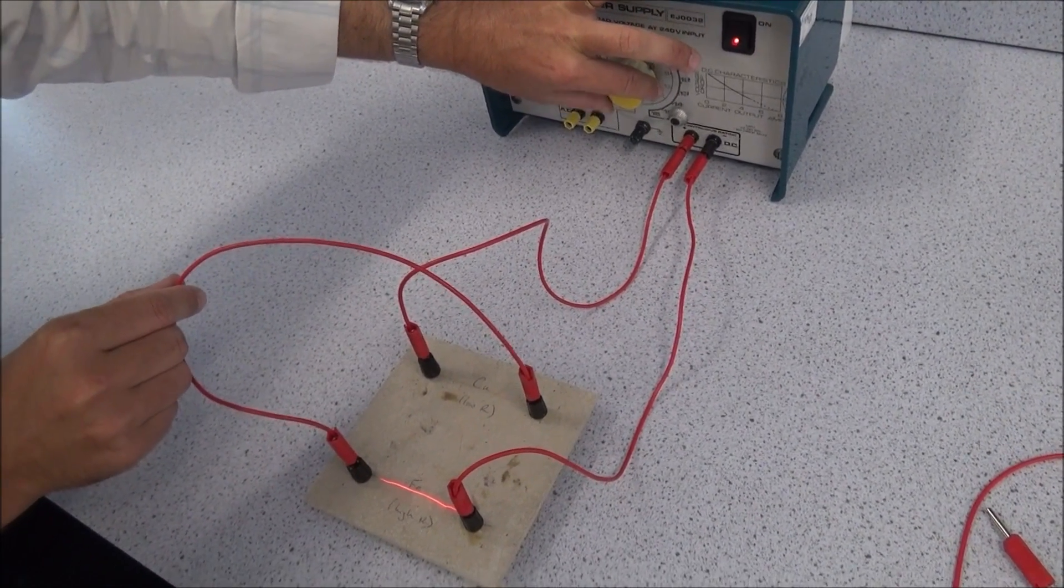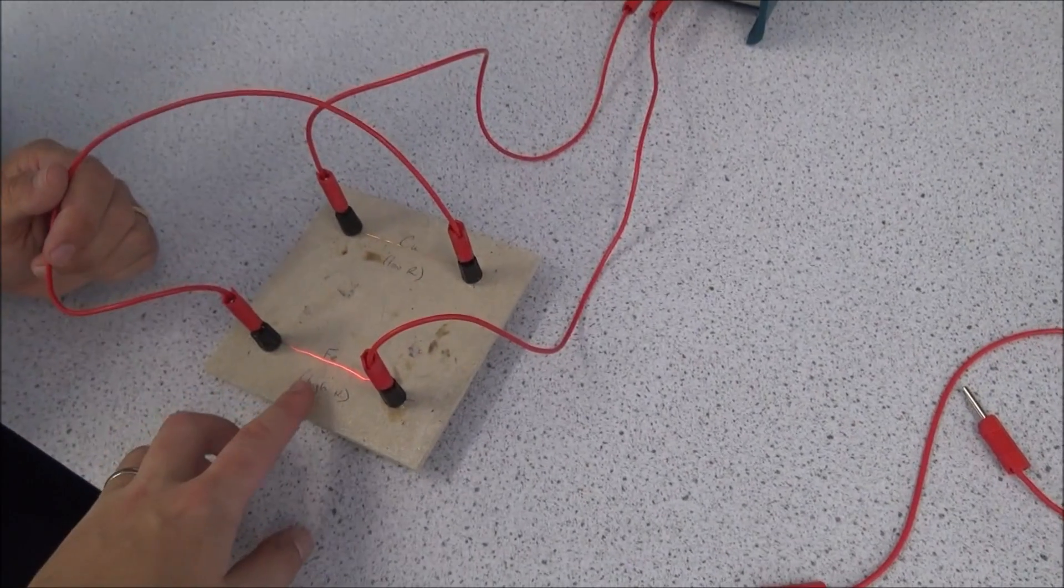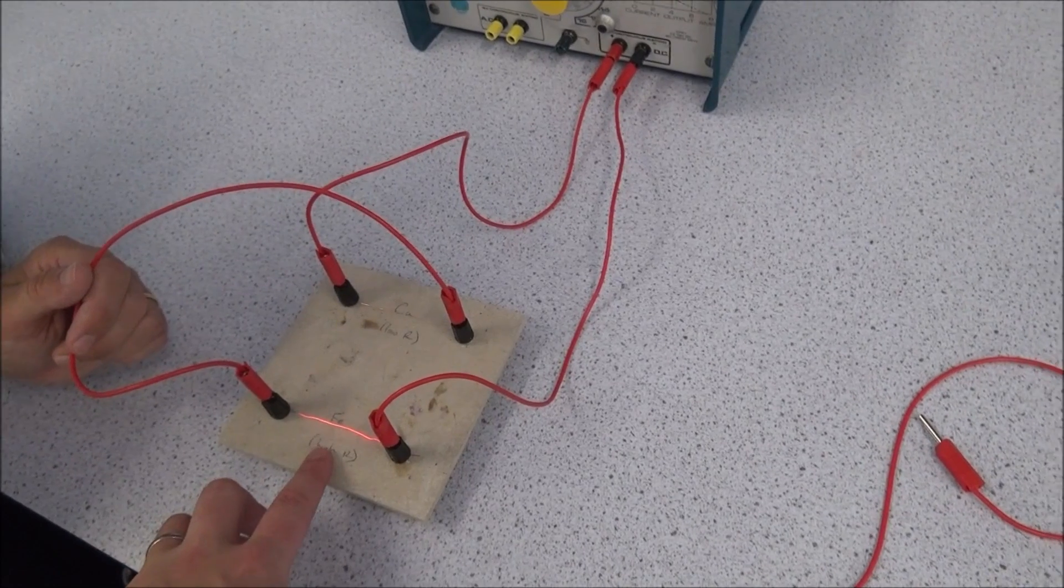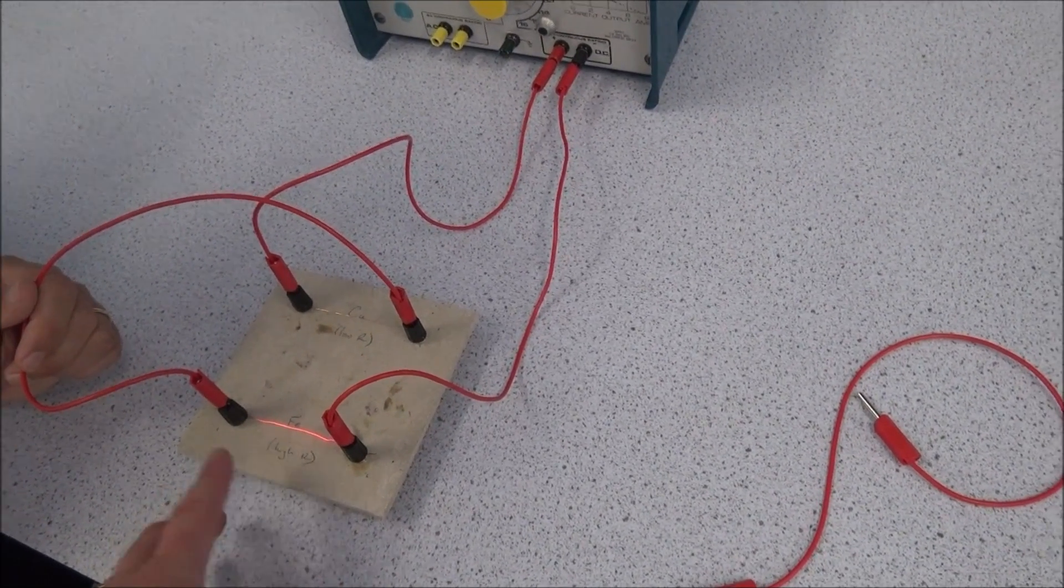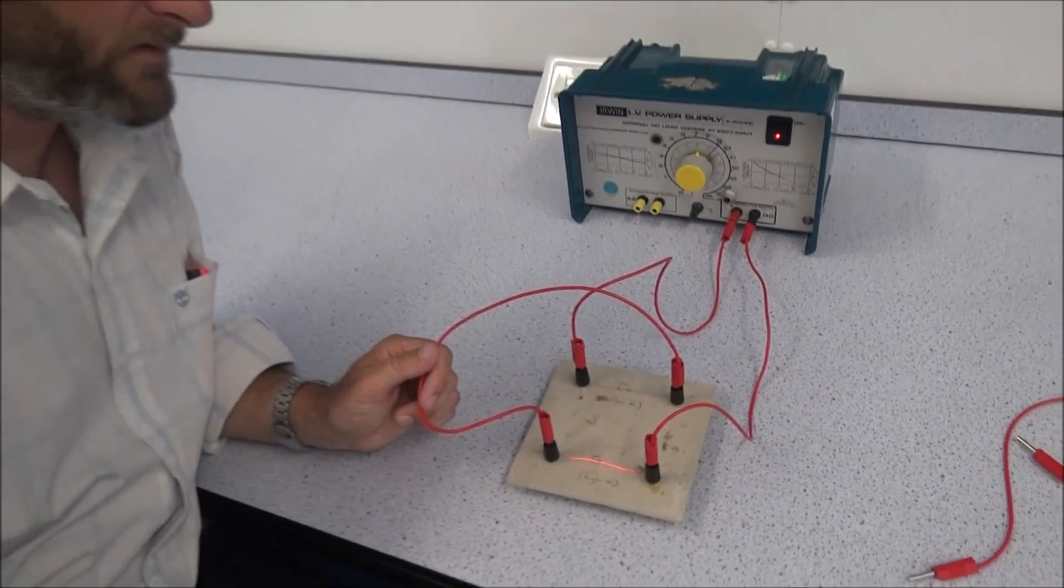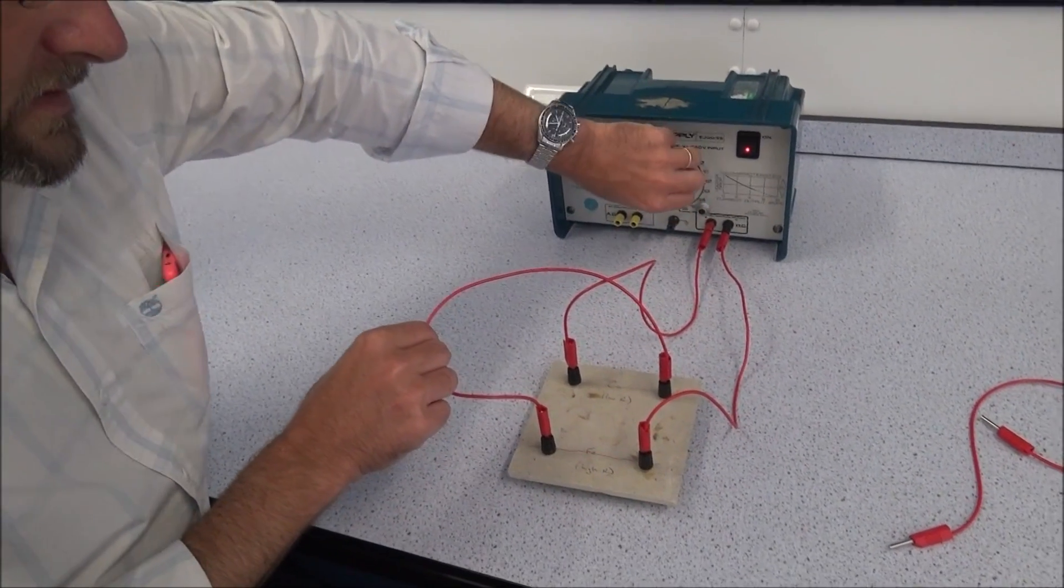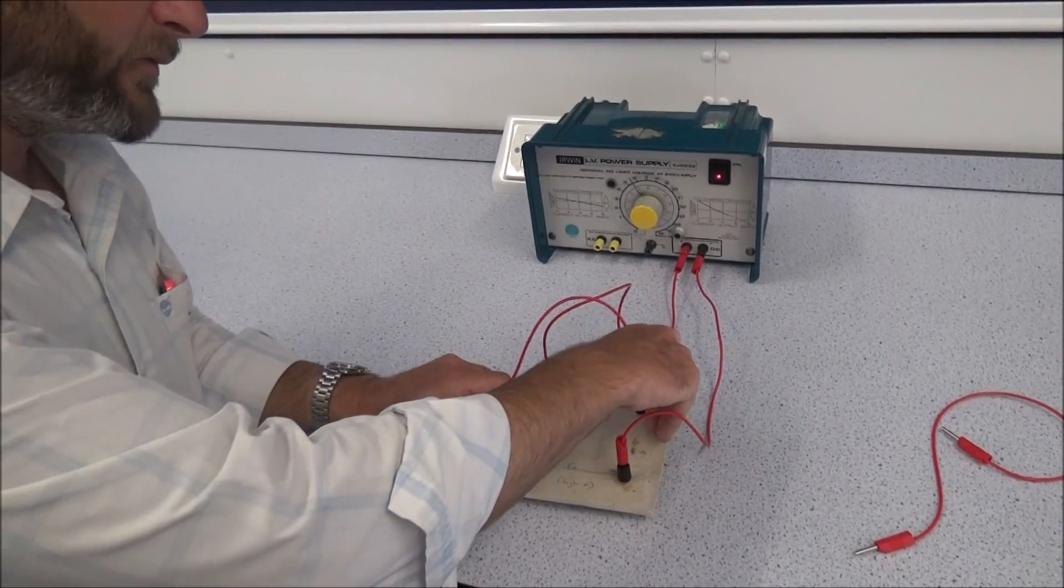We can also think about how the EMF is shared between the two components. If that's got a higher resistance, that's going to have a greater share of the potential difference. So V is going to be bigger, and if I is the same for both, then that means the power being equal to IV must be bigger. So more energy is coming out per second. Absolutely, you can explain it that way. It's just as valid.